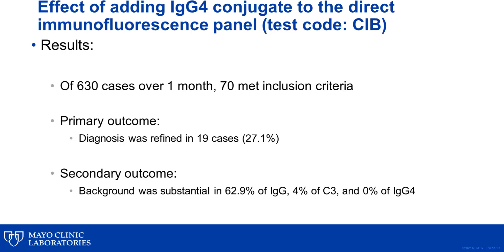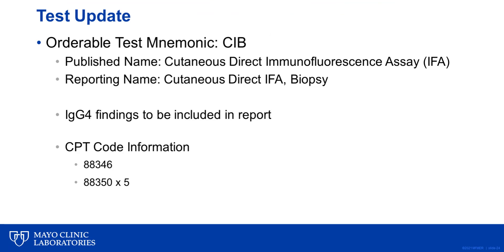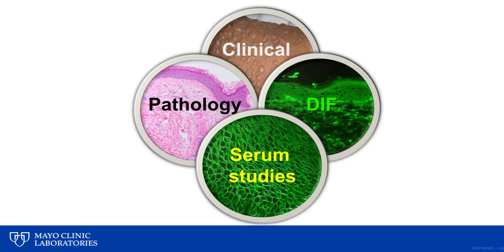If you have any questions about this or how to interpret the results, please do not hesitate to contact the immunodermatology laboratory, and one of our cutaneous immunopathologists would be happy to discuss your case with you. If you would like to order direct immunofluorescence at Mayo Clinic for the skin, please continue to use test code CIB — there is no need to order IgG4 conjugate testing separately. The addition of the IgG4 conjugate should increase sensitivity and specificity, but the final clinical diagnosis should be based on a combination of clinical, histopathologic, immunofluorescence, and serum studies.